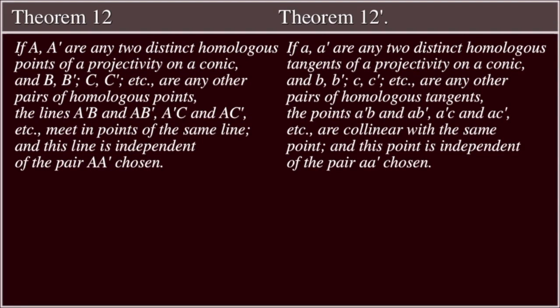Theorem 12: If a, a' are any two distinct homologous points of a projectivity on a conic, and b, b'; c, c'; etc. are any other pairs of homologous points, the lines a'b and ab', a'c and ac', etc. meet at any point of the same line, and this line is independent of the pair a, a' chosen.